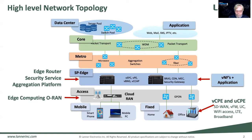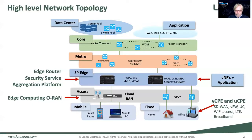The next level where we see a disaggregated approach taking place is around the access technology — either the distributed units or the centralized units for Cloud RAN or Open RAN deployments. These platforms have specific requirements, primarily in terms of support for precision time protocol, for example, but also for the need for acceleration. So not only an x86 approach, but also acceleration for either an FPGA or a GPU workload. They also have been limited in terms of space, so there are specific requirements for what we consider as a white box for Open RAN and Cloud RAN deployments.